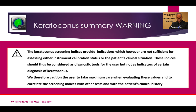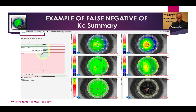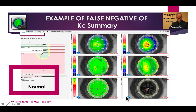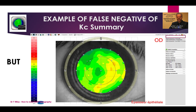The keratoconus screening indices provide indication, however they are not sufficient for assessing instrument calibration status or the patient's clinical situation. These indices should be considered as diagnostic tools only for the user, not as indicators of a certain diagnosis of keratoconus. For example, a false negative of the keratoconus summary: in this case you will find a normal result, but if you look at the epithelial mapping you will find a donut image which is highly suggestive for early keratoconus. So this is a false negative.